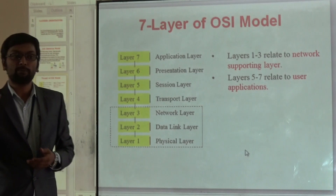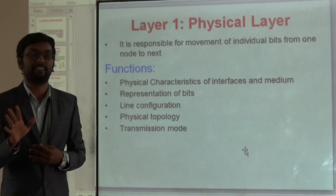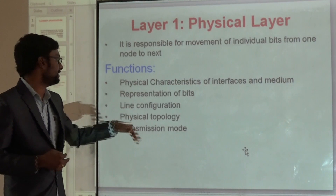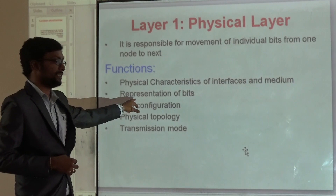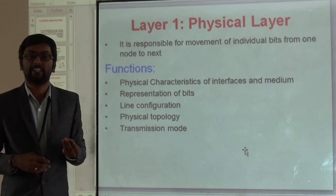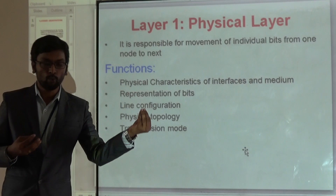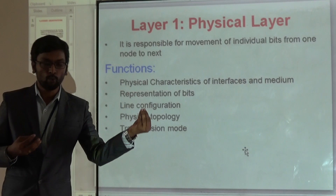First, the Physical layer. The Physical layer is responsible for all physical components and electrical properties of the data — for example, if we send one byte it consumes 5 volts. The functions of the physical layer include: physical characteristics of interfaces and medium, representation of bits — how many bits we are sending — line configuration, which means point-to-point connection or multipoint connection. One device to one device is point-to-point; one device to multiple devices is multipoint. The physical layer also handles physical topology, which is the arrangement of a system in the physical layer.